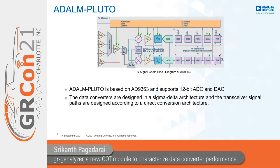The first example we will consider involves the Pluto SDR, or AD-ADALM Pluto. It is a well-known transceiver module made by Analog Devices containing the AD9363, which is an integrated transceiver with 12-bit resolution, an operating frequency range of 325 MHz to 3.8 GHz, and up to 20 MHz of instantaneous bandwidth. The data converters are designed according to a sigma-delta architecture, and the transceiver signal paths follow a direct conversion framework. The device includes three half-band filters that can be configured with decimation factors of 2 or 3, and a programmable filter with a programmable decimation factor.